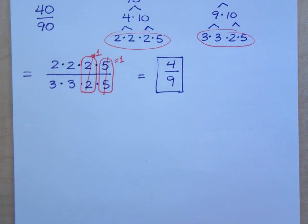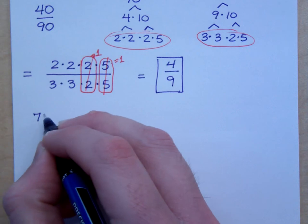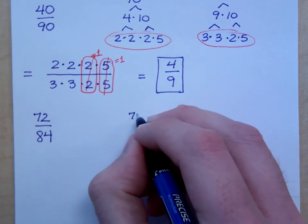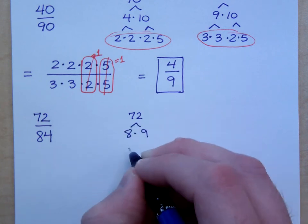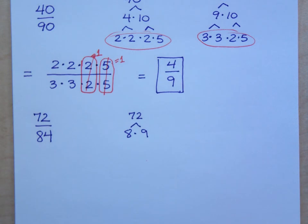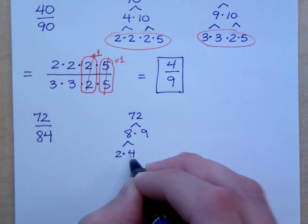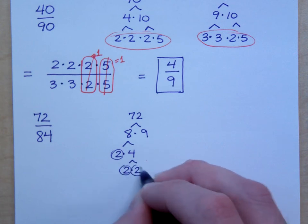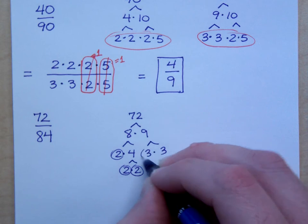Now, I think we also had 72 over 84. If I did a factor tree out on the side for these guys, 72 is 8 times 9. Now, is that the only way to break down 72? No. It's just one way. 8 is 2 times 4, so there's a prime number, and 4 is 2 times 2. 9 breaks down as 3 times 3, and both of these guys are prime.